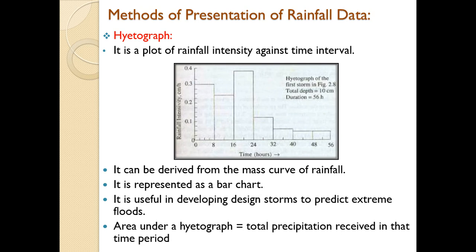Next is the hydrograph. A hydrograph is a plot of rainfall intensity against time. It can be derived from the mass curve of rainfall and is represented as a bar chart. It is useful in developing design storms to predict extreme floods. The area under a hydrograph equals the total precipitation received in that time period. For example, from 0 to 8 hours and 8 to 16 hours, bars represent the intensity at each interval.